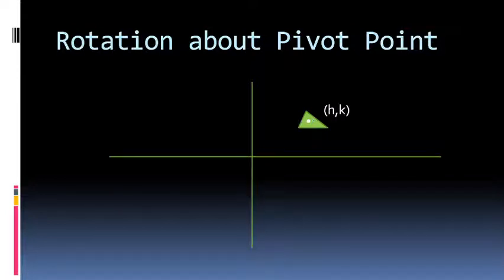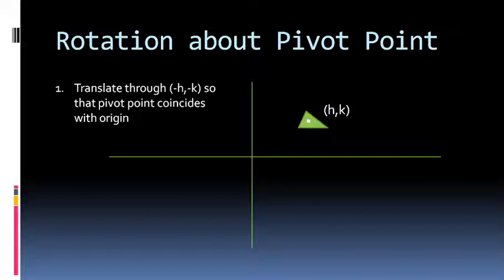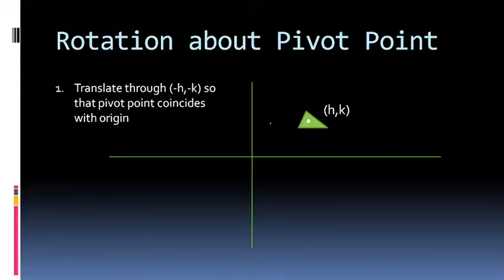Let us assume the coordinates of the pivot point are h and k, where h is the horizontal coordinate (abscissa) and k is the vertical coordinate. To perform this rotation, we will have to do it in three steps. First, you translate the triangle so that the pivot point coincides with the origin — meaning you move minus h in the horizontal direction and minus k in the vertical direction. So the translation parameters are minus h and minus k.